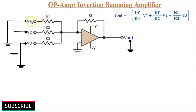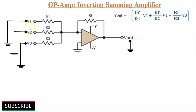3 input voltages V1, V2 and V3 are applied to the inverting terminal through input resistors R1, R2 and R3 respectively. The output voltage of the summing amplifier is proportional to the negative of the algebraic sum of input voltages along with its gain. 3 input voltages V1, V2 and V3 produce currents I1, I2 and I3 respectively.